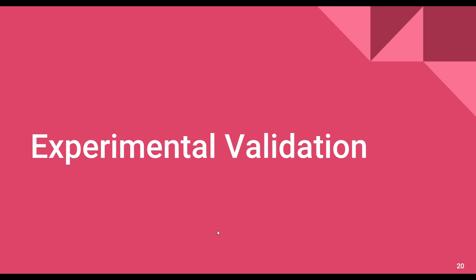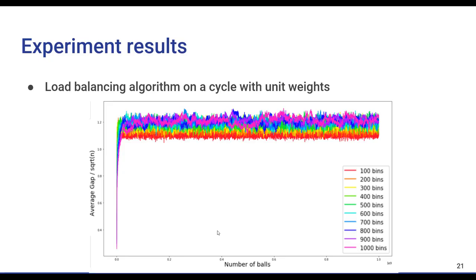Finally, we have performed a couple of simulations to see how the algorithm will perform. We'll just quickly go through them here. We implemented the algorithm and ran it on a cycle with unit weights for graphs of different sizes. We plotted the gap divided by the square root of the size of the graph, and this was the result. It suggests that the gap is theta of n since it always stayed between 1 and 1.4 in our experiments.